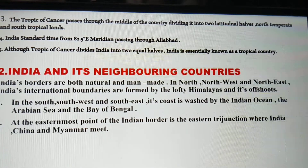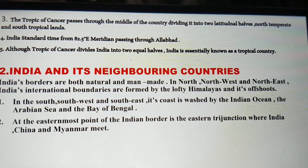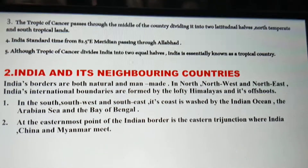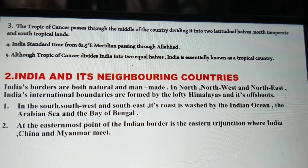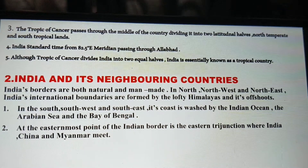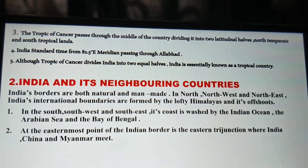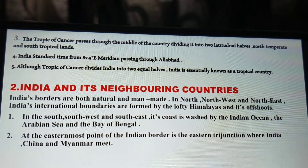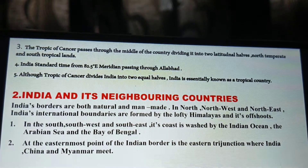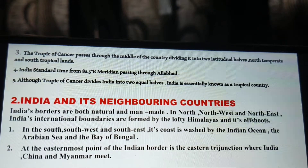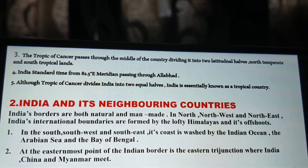Second topic: India and its neighboring countries. India's borders are both natural and manmade. In the north, northwest and northeast, India's international boundaries are formed by the lofty Himalayas and its offshoots. In the south, southwest and southeast, its coast is washed by the Indian Ocean, the Arabian Sea and the Bay of Bengal.